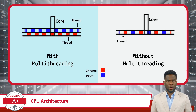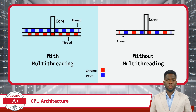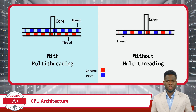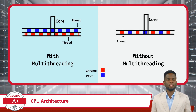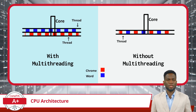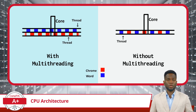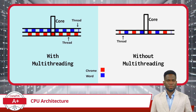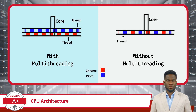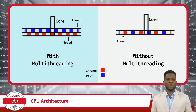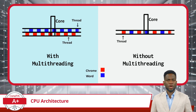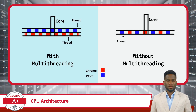For instance, while one thread is processing text changes in Word, the processor can concurrently handle the task of loading web pages in Chrome. This agile multitasking ensures that the processor remains actively engaged, efficiently utilizing CPU resources even amidst diverse workloads. As a result, multi-threading optimizes CPU utilization and enhances overall system efficiency and responsiveness, allowing users to seamlessly navigate between editing documents and browsing the web without experiencing delays or slowdowns.